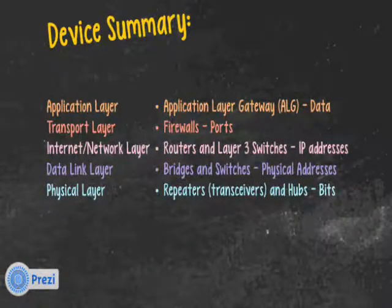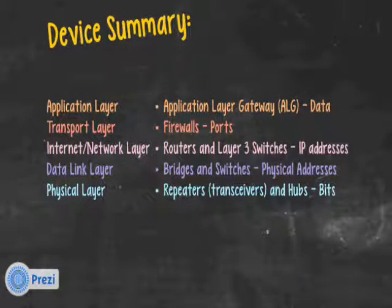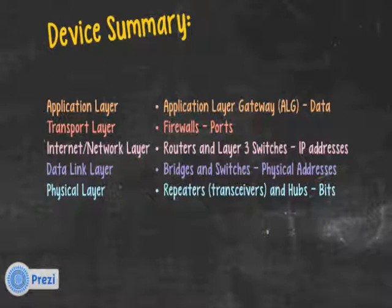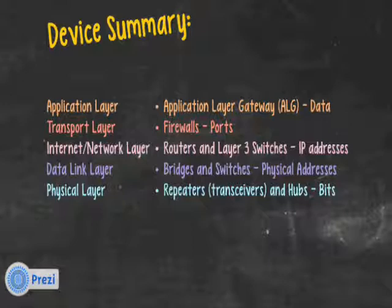Device summary: Application layer — application layer gateways (ALGs), also called stateful packet inspection, inspect data and make decisions based on content. Transport layer — firewalls make decisions based on ports. Internet/network layer — routers and layer 3 switches examine packets and make decisions based on IP addresses. Data link layer — bridges and switches look at frames and make decisions based on physical addresses. Physical layer — repeaters, hubs, and transceivers make no decisions; all they do is regurgitate the bits.